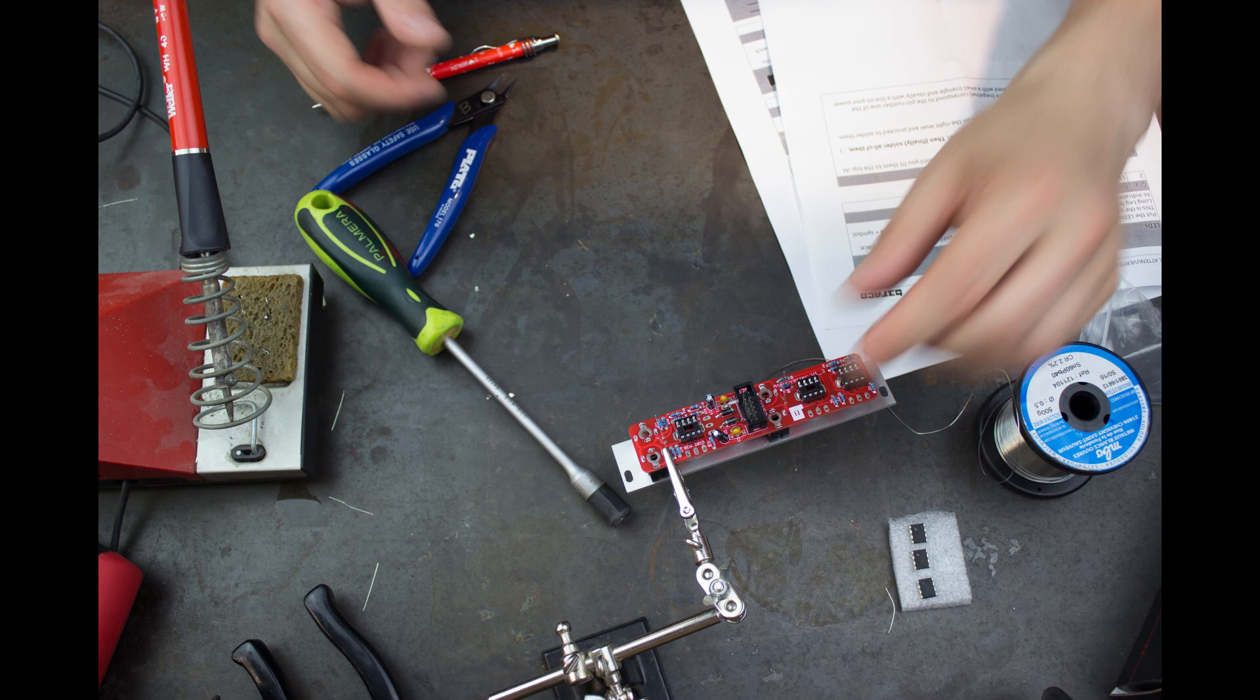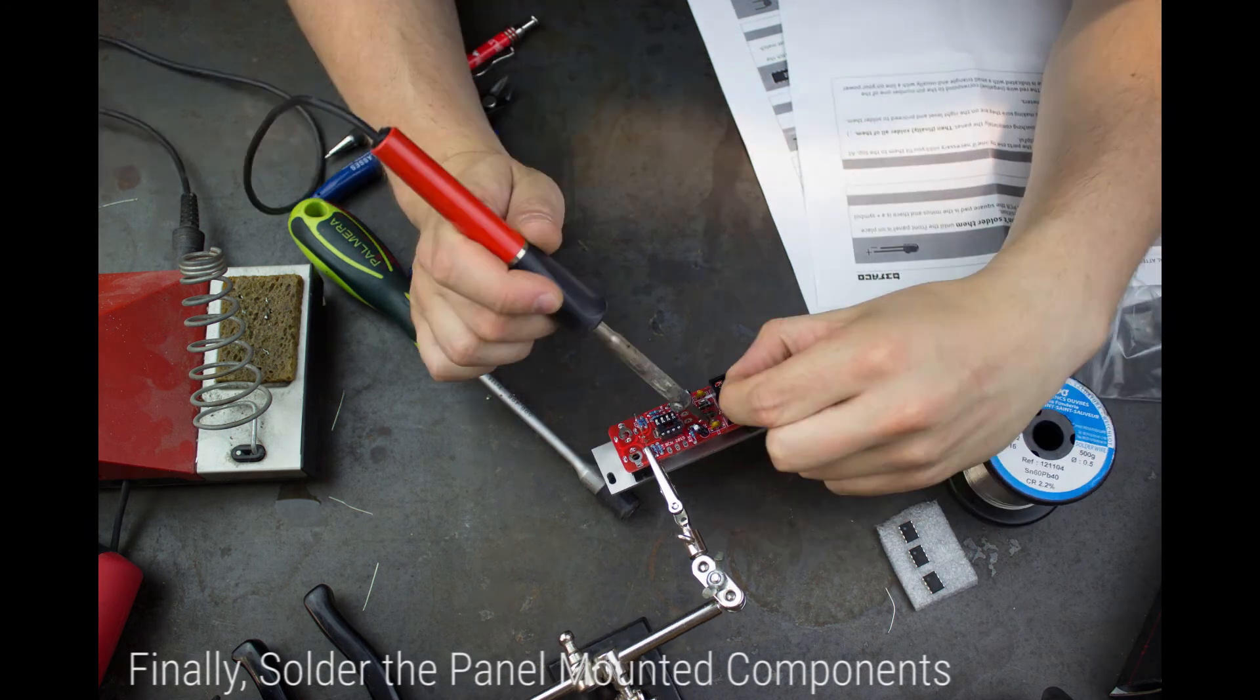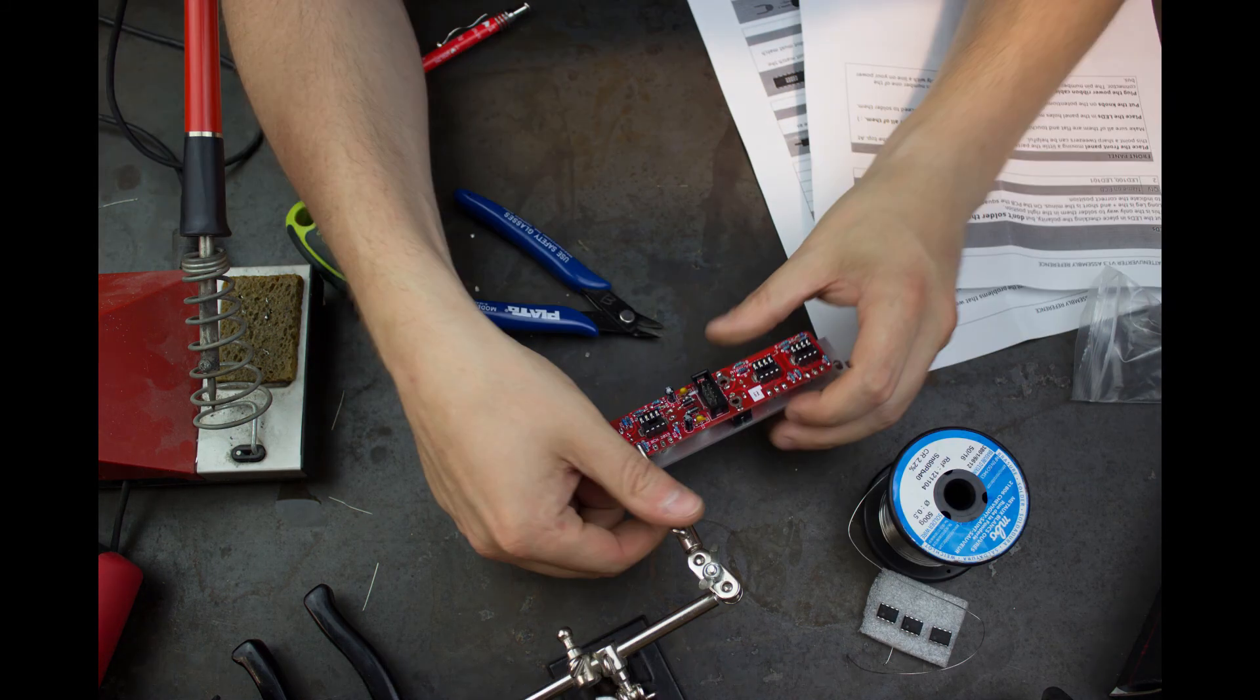With our panels secure we can now go ahead and solder all the parts. Try and be methodical marking off each component and double checking that you got each of its legs as you go as it can be quite easy to miss one or two if you just go at it at random.